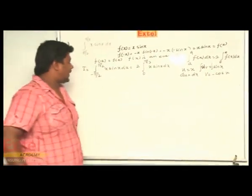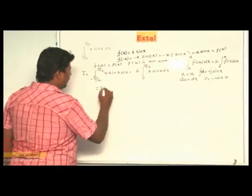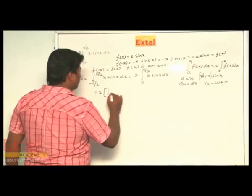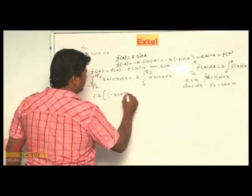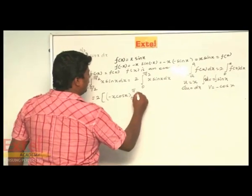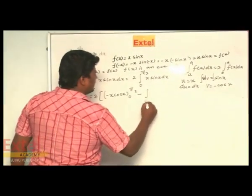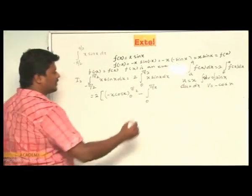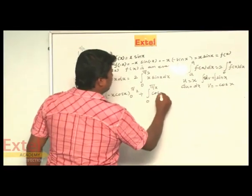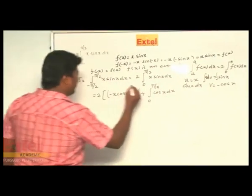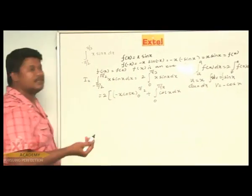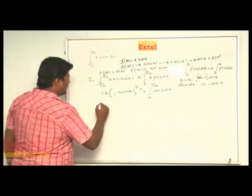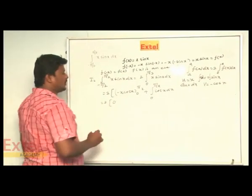Using the formula: integral of u dv equals uv minus integral v du, we get minus x cos x evaluated from 0 to π/2, minus the integral from 0 to π/2 of minus cos x dx. Applying the limits: cos(π/2) becomes 0, and when x equals 0 it is also 0, so the first term vanishes to 0.